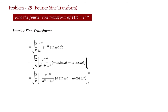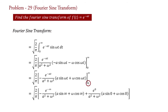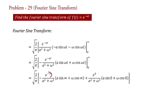Putting the values of limits: at the upper limit, e raised to minus infinity gives 1 upon e raised to infinity, which equals 1 upon infinity, and that is 0. Therefore, the entire upper limit term is 0.